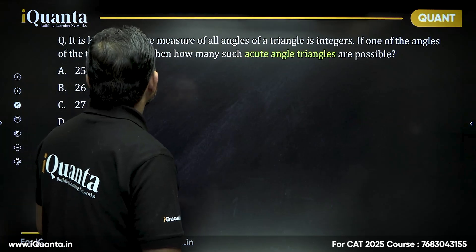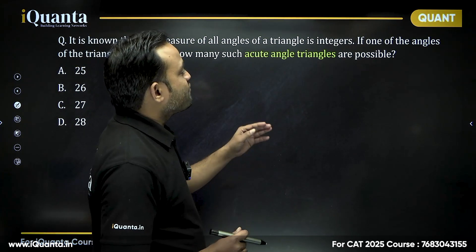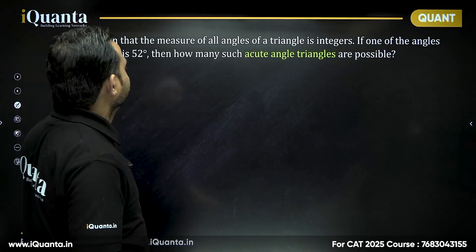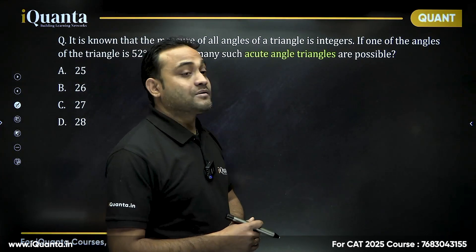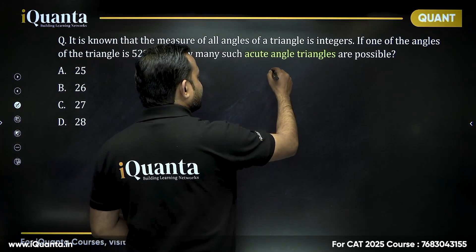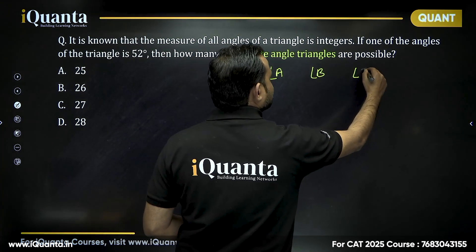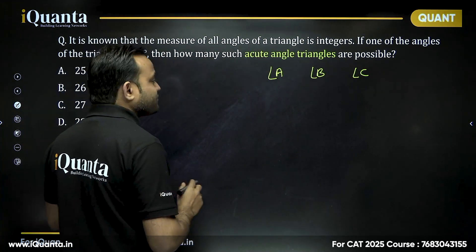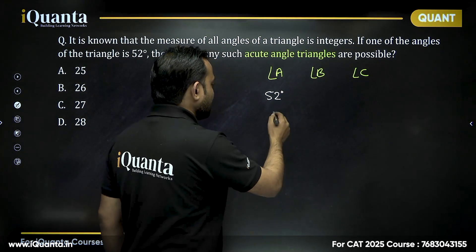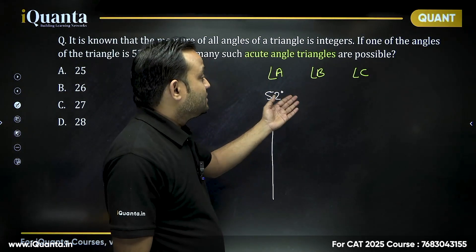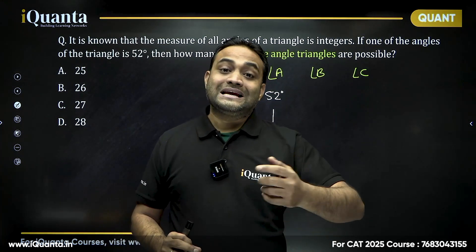First question: it is known that the measure of all angles of a triangle are integers. If one of the angles of the triangle is 52 degrees, then how many such acute angle triangles are possible? Let's say we have three angles — angle A, angle B, and angle C. One of the angles is fixed at 52 degrees. For the triangle to be acute, all three angles must be less than 90 degrees.